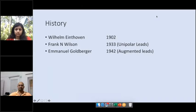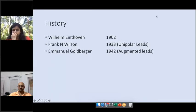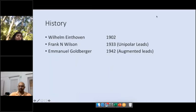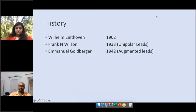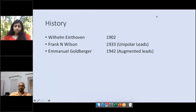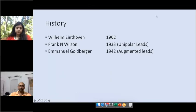We start with the very basic: who discovered ECG? As you know from physiology, the principle of electrocardiogram discovery was by Wilhelm Einthoven. He was a physiologist from the Netherlands, a Dutch physician, who discovered the electrocardiogram in 1902.